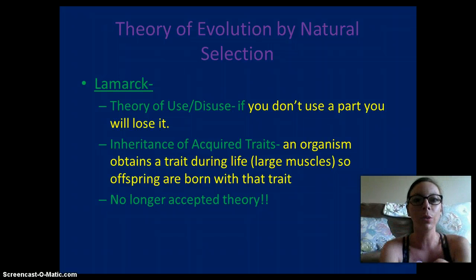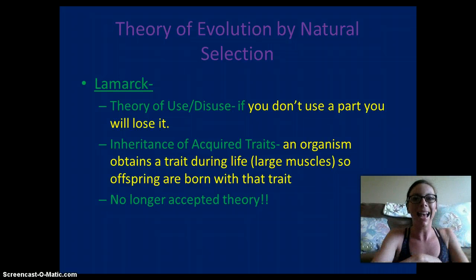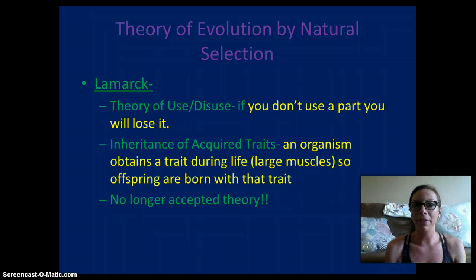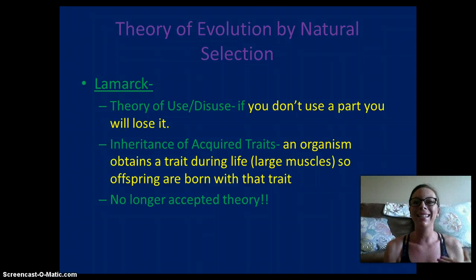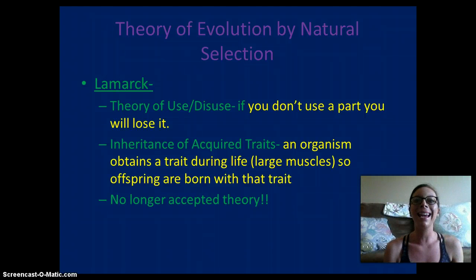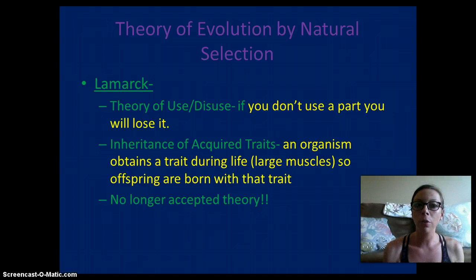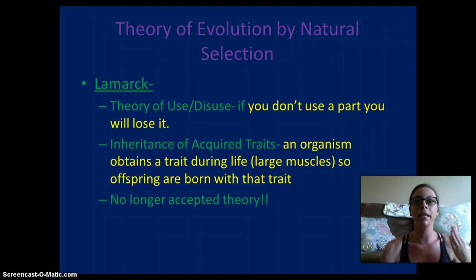The theory of evolution by natural selection was actually developed by multiple scientists at the same time. Lamarck had a theory of use and disuse. He knew that organisms were changing over time, but he didn't really know how this occurred. His theory was use and disuse — if you don't use a part of you, you will lose it. For example, snakes did not have legs; they mustn't have used their legs, so they lost them.